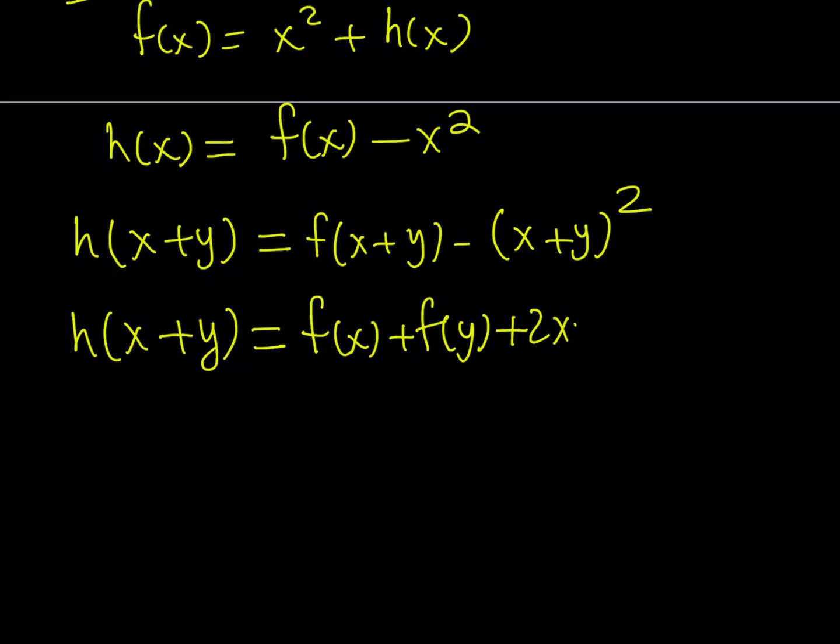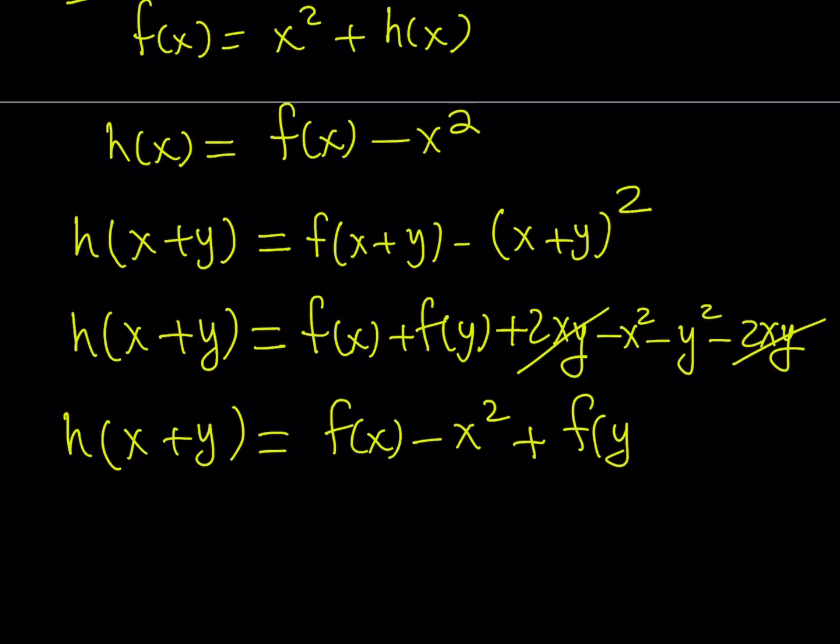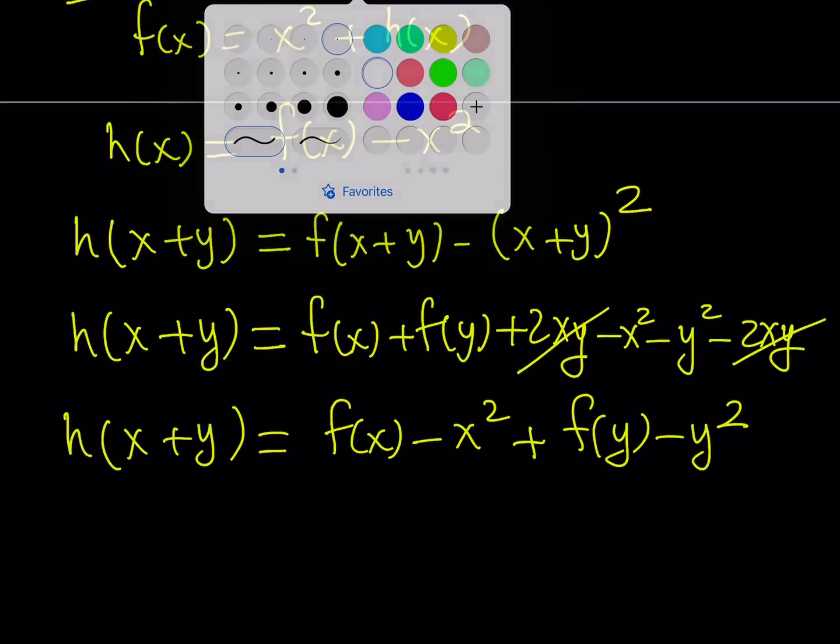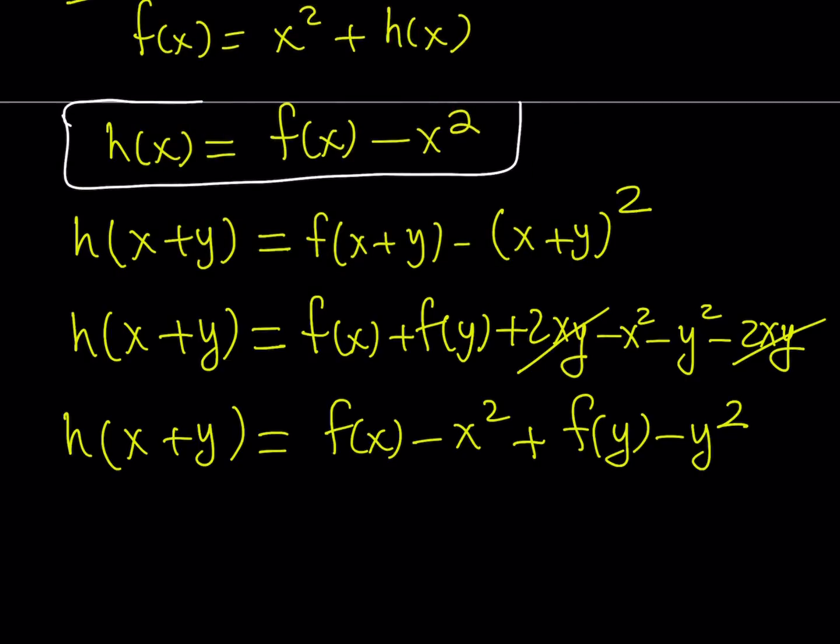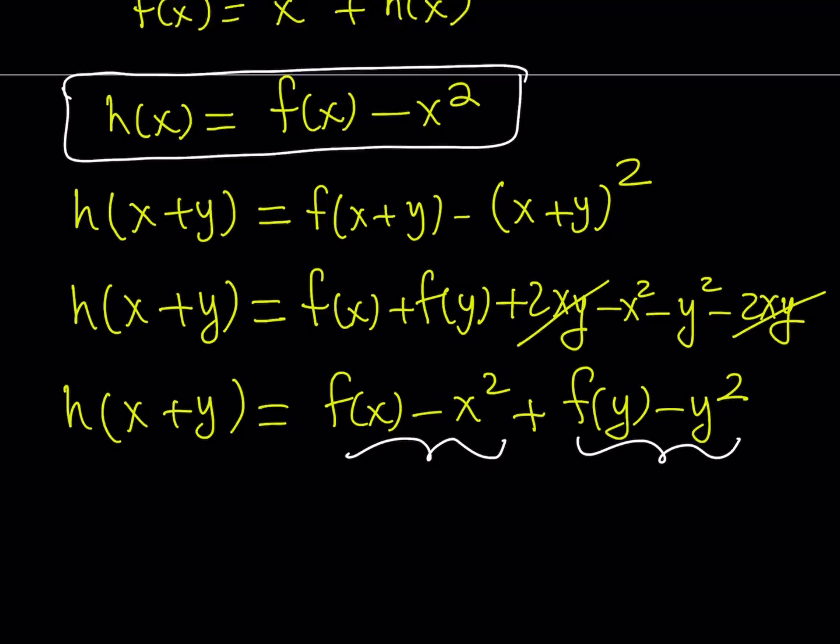And that gives me something nice when I expand this. Of course, I have to negate everything. Now here, 2xy cancels out. And we end up with something like this. So let's go ahead and rearrange the terms. And write h of x plus y as f of x minus x squared plus f of y minus y squared. And what does this tell you, given that we know h of x can be written as f of x minus x squared? Yes, that is correct. This is h of x and this is h of y.